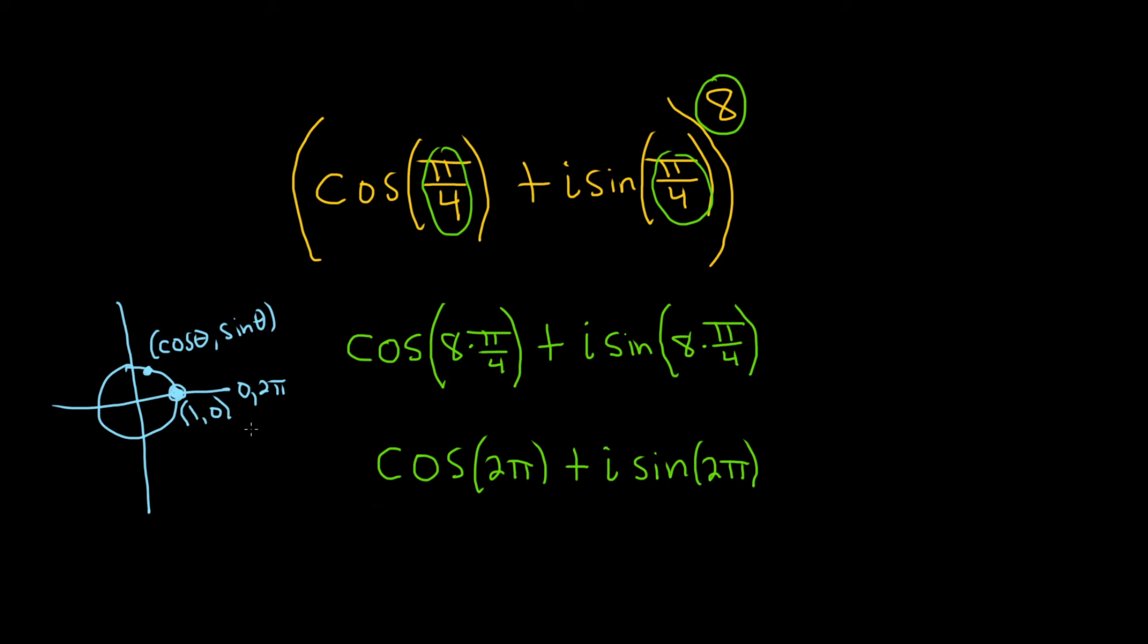So cosine is the x coordinate. That would mean that this is equal to one plus i times, and then sine is the y coordinate. That means this is zero. So you just get one.